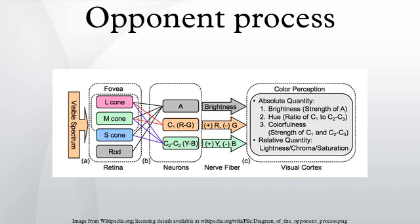While the trichromatic theory defines the way the retina of the eye allows the visual system to detect color with three types of cones, the opponent process theory accounts for mechanisms that receive and process information from cones.